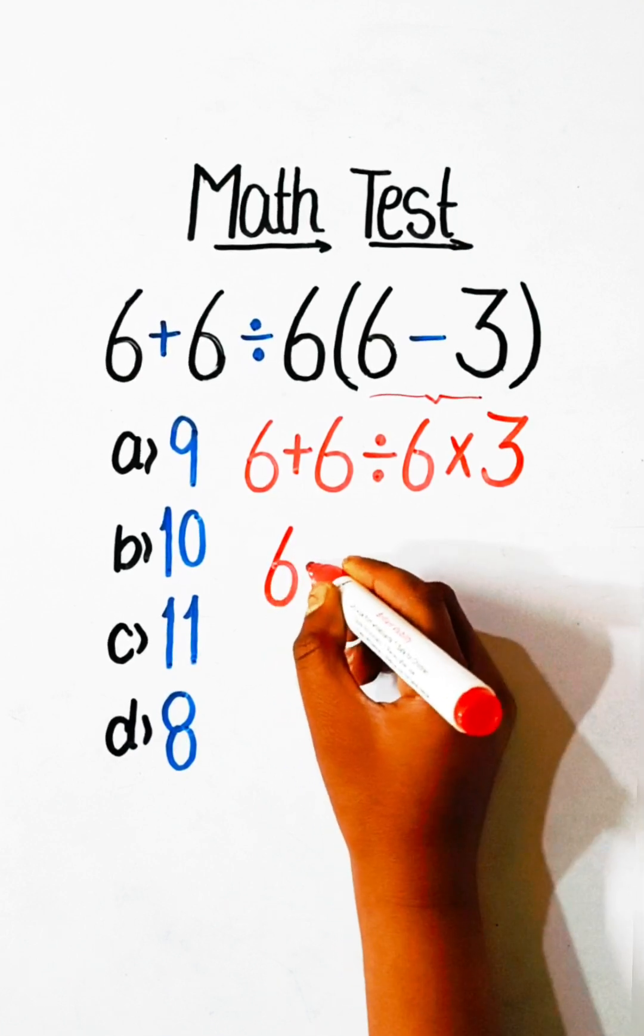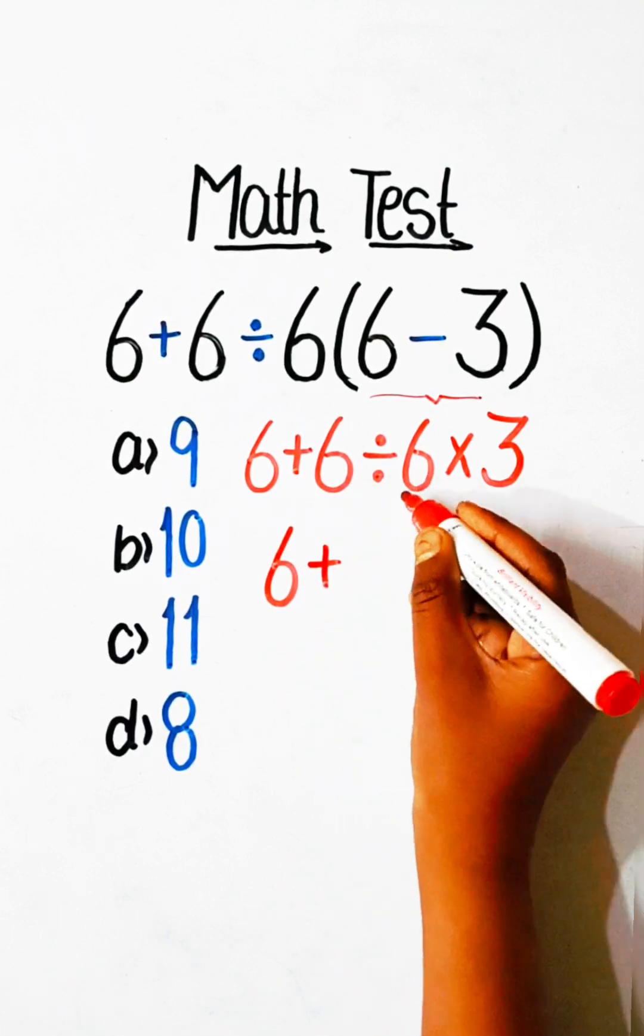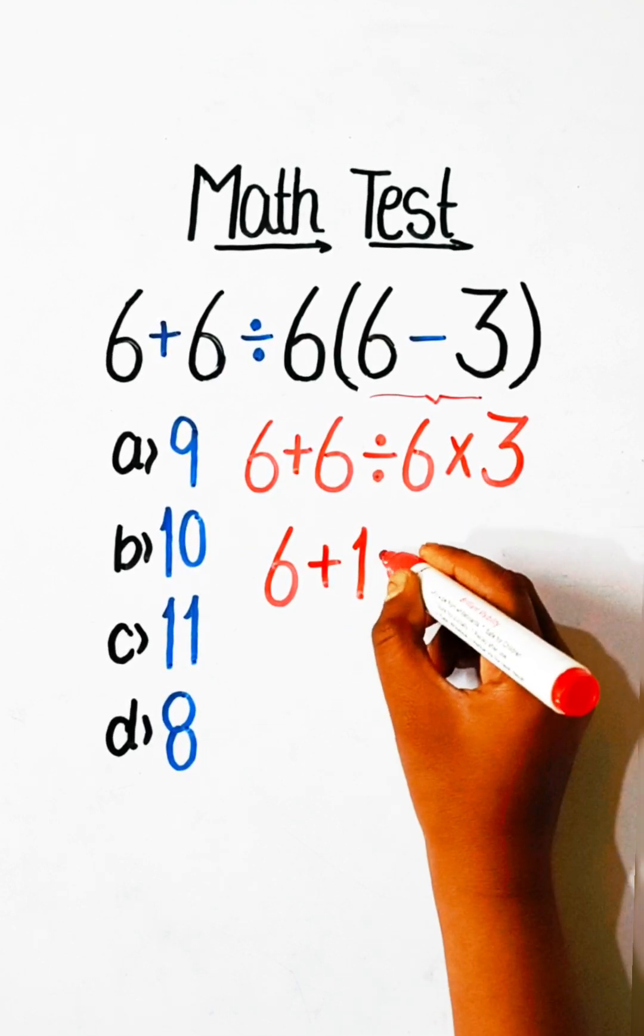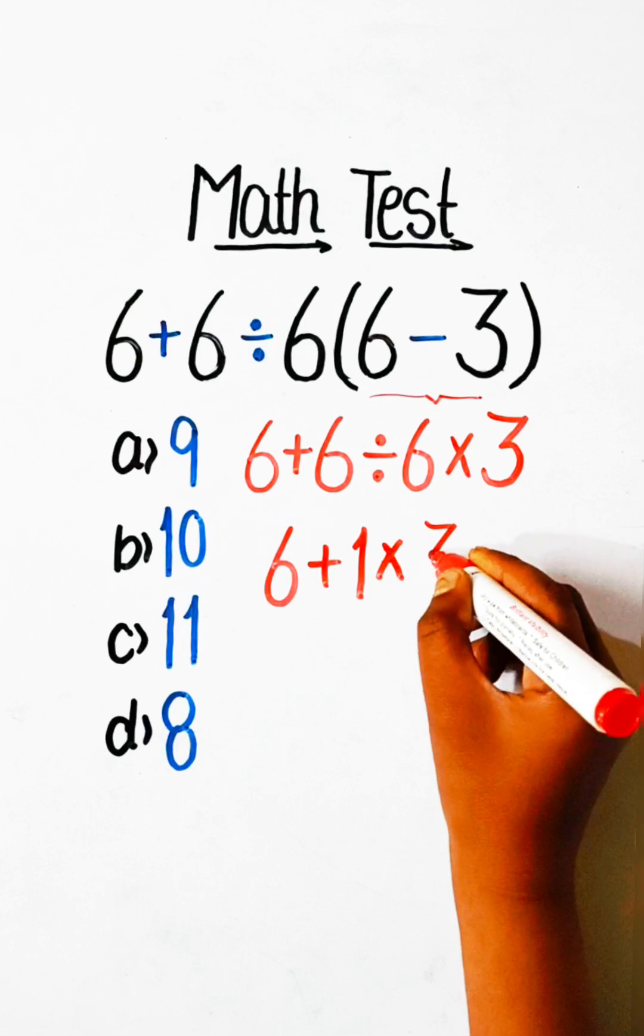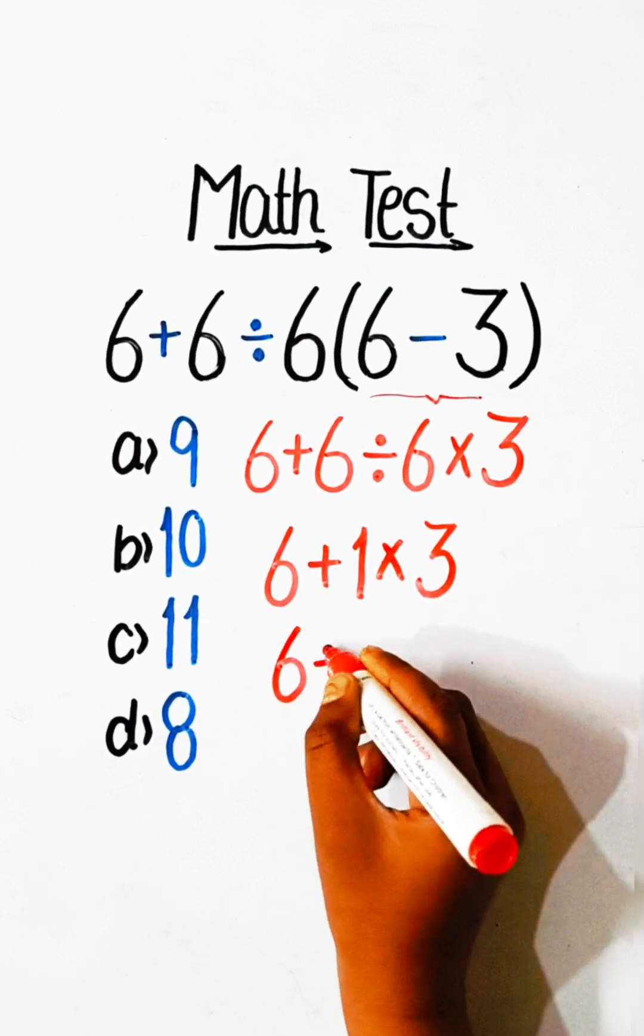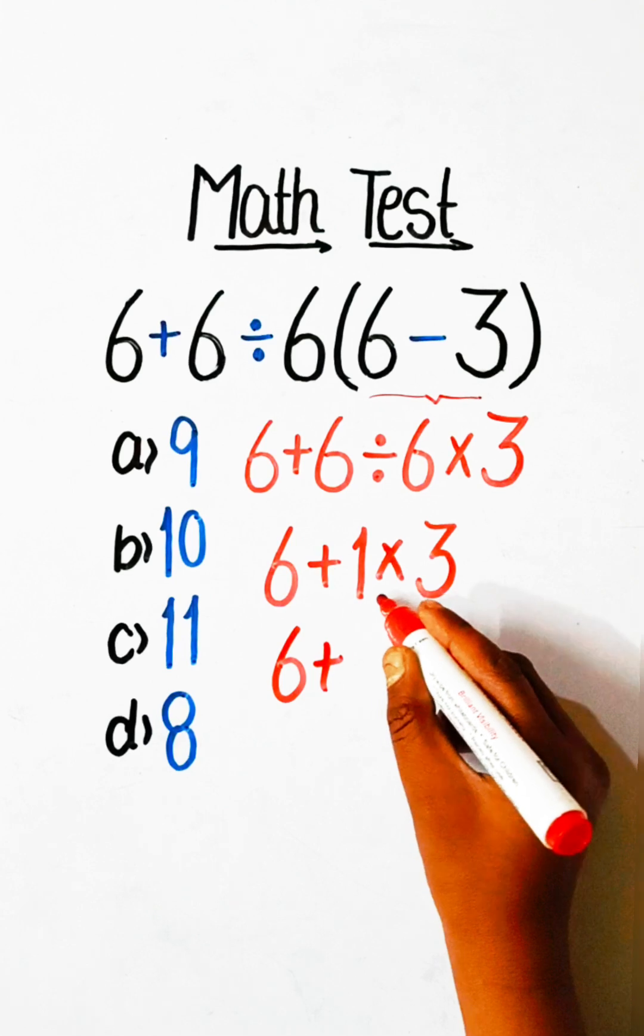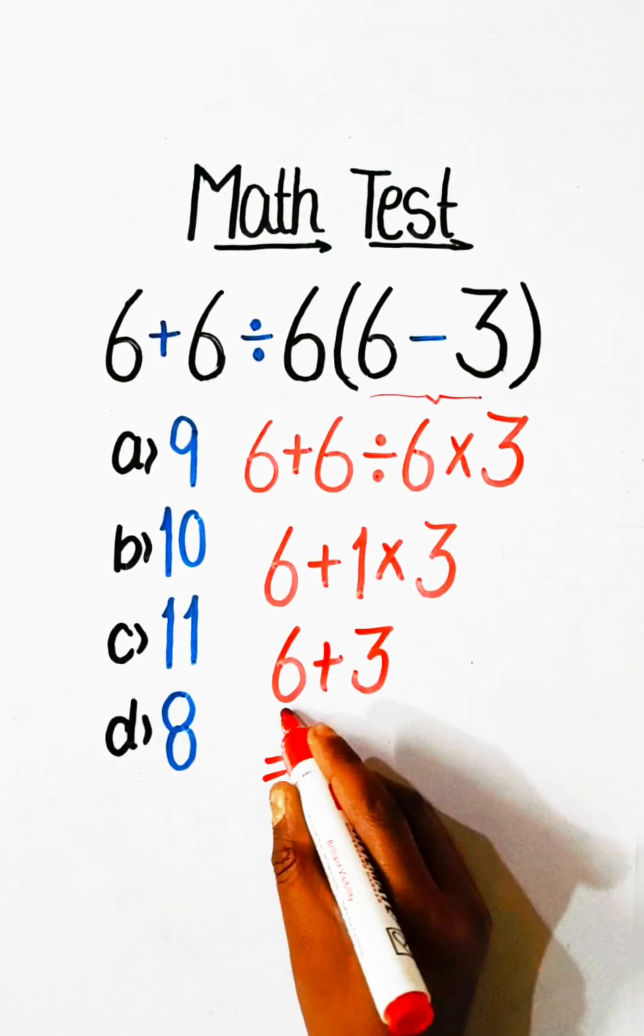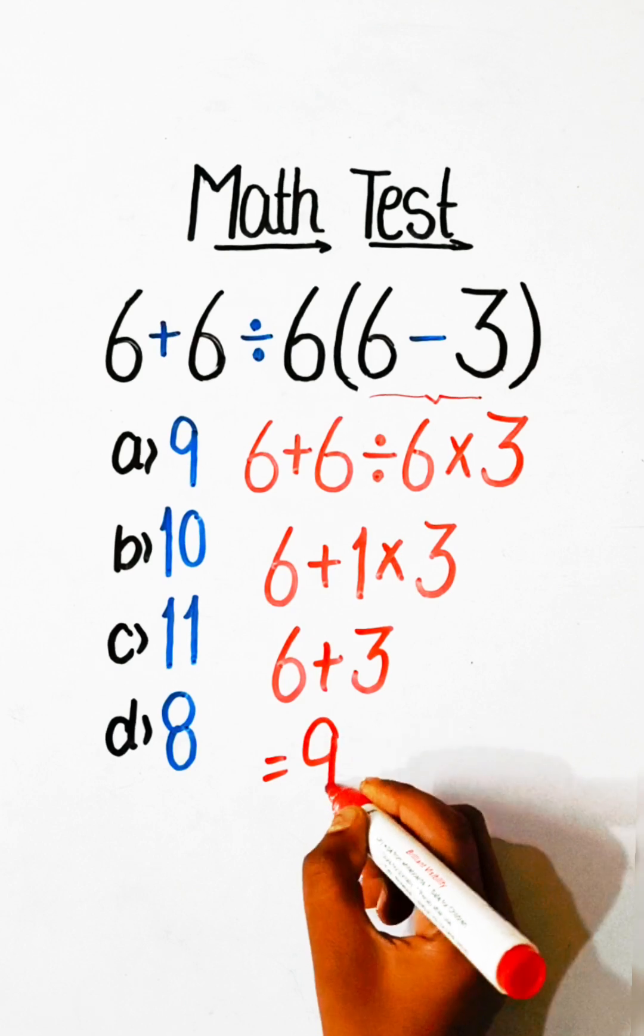6 plus 6 divide by 6 is 1, multiply 3. 6 plus 1 multiply by 3 is 3. 6 plus 3 equals 9.